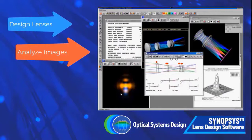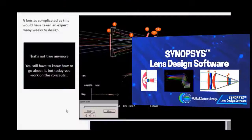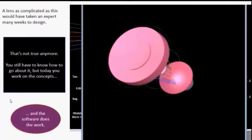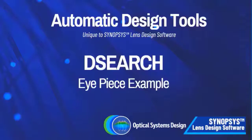Here's an example of a fairly complicated lens. This would have taken an expert a long time to design, but that's not true anymore. You still have to know some fundamental principles, but today you just work on the concepts, and the software does the work. Today, many designs can be roughed out entirely by the computer.